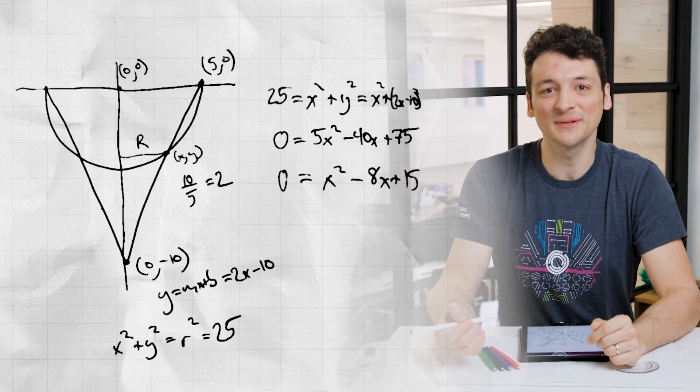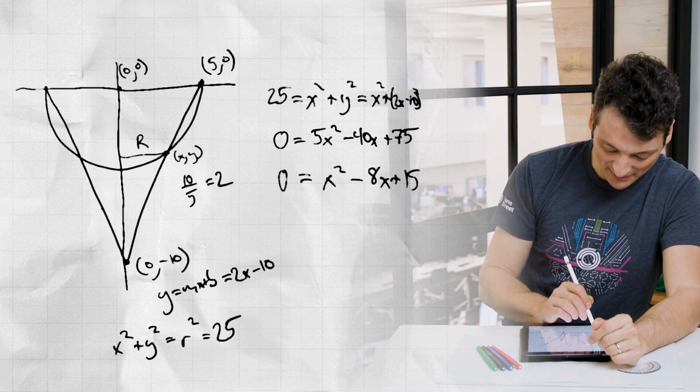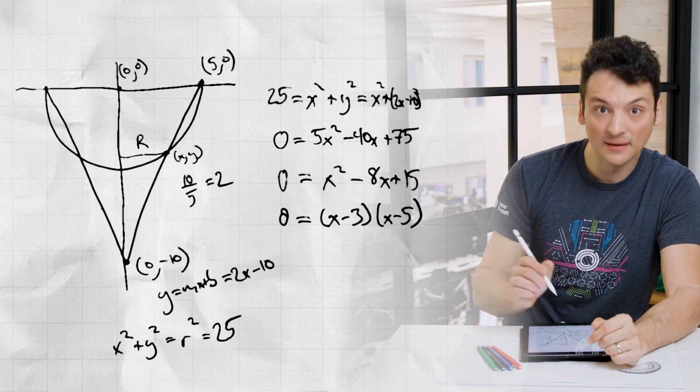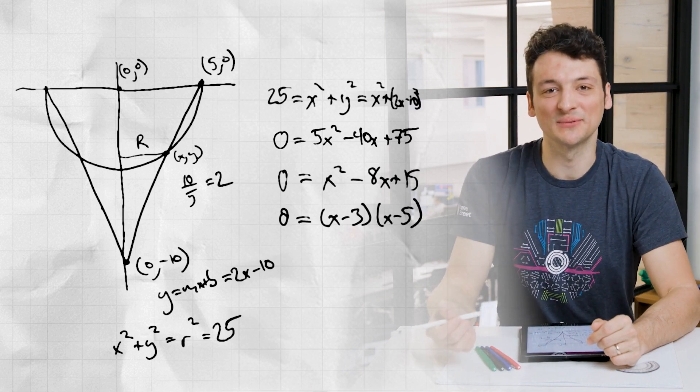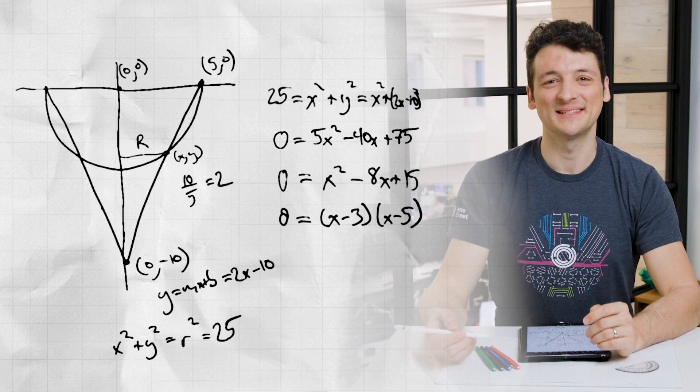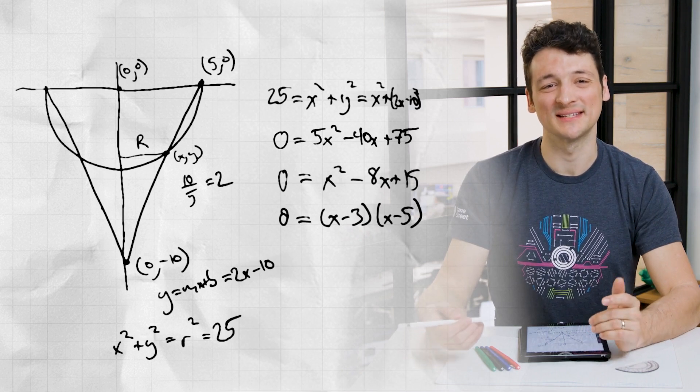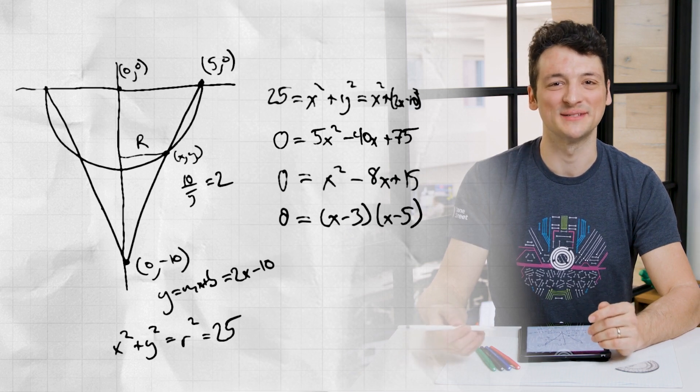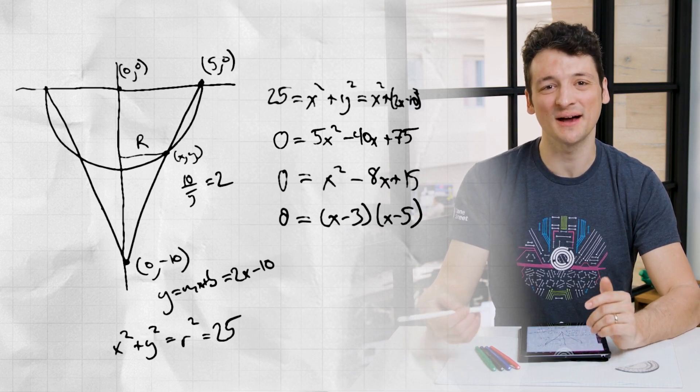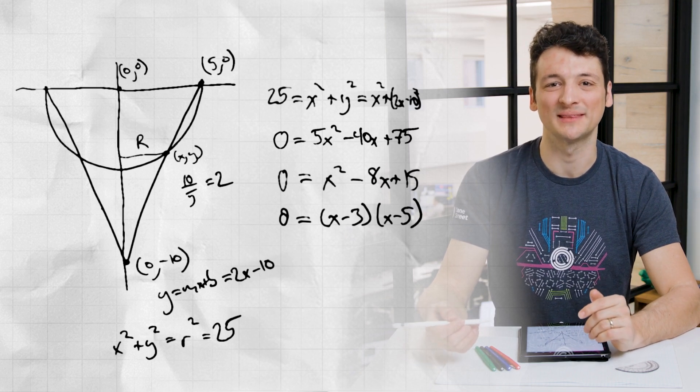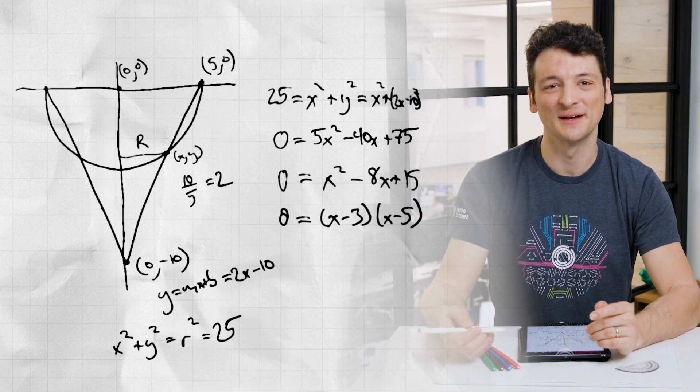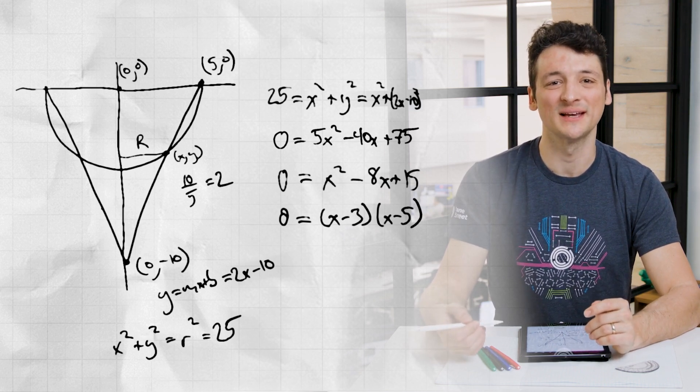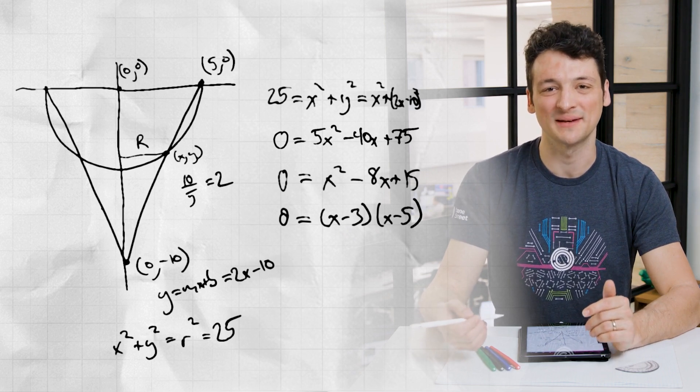We could use the quadratic formula to find the values for x, or just notice that this factors as (x minus 3) times (x minus 5). This implies that x equals 3 or x equals 5. It's no surprise that x equals 5 is a solution, because we already knew that the side of the cone met the side of the sphere at the point (5, 0). The solution we were interested in is the other solution, which represents the point at the bottom of the slush that must get removed from the side of the sphere before it will fit in the cone. It turns out that the x coordinate of this point is 3, so the radius of the circle we are looking for measures 3 centimeters.